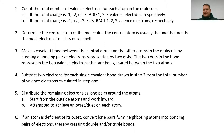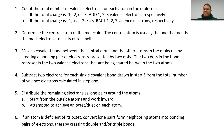Step three: start connecting the elements around the central atom by forming covalent bonds using two dots. Remember — two dots represent a covalent bond. Place all the other elements around the central atom using two dots each to create a covalent bond. Once you've done that, go to step four.